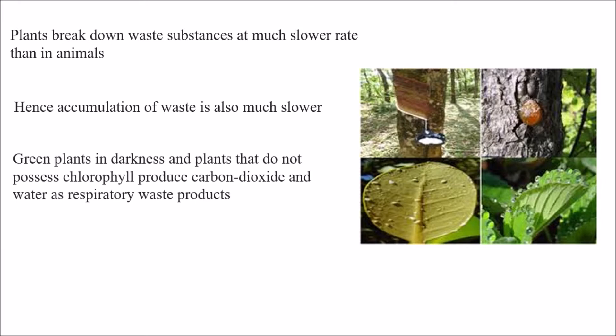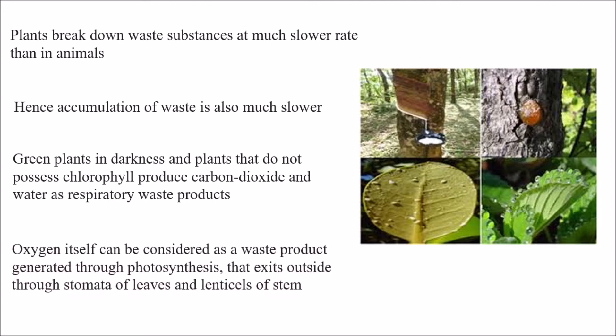Green plants in darkness, and plants that do not possess chlorophyll — meaning non-photosynthetic plants — produce carbon dioxide and water as respiratory waste products. Oxygen itself is considered a waste product generated through photosynthesis, and it exits outside through the stomata of leaves and lenticles of the stem.